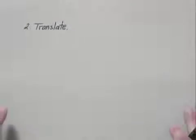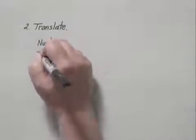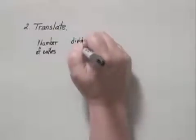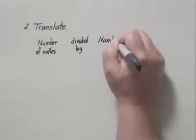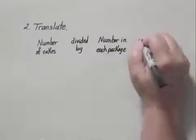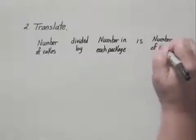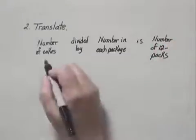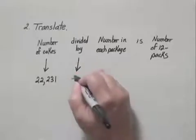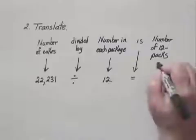We'll first rewrite the sentence using English so we can translate directly. We have the number of cakes, which we are given. And then if we divide that, the number of cakes divided by the number in each package, which we are also given, which was 12, that is the number of 12-packs, which we want to find, and we call that N. So to translate, the number of cakes, 22,231 divided by is the division symbol. The number in each package is 12. Is translates to equals, and the number of 12-packs is N.